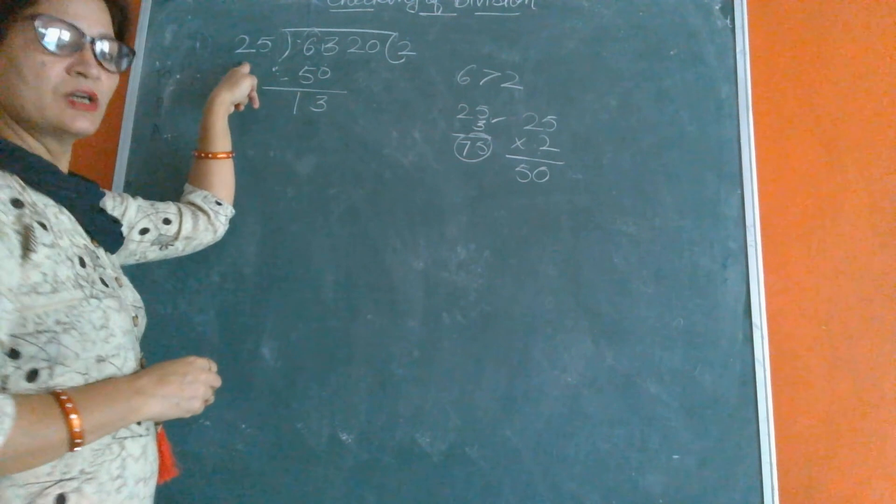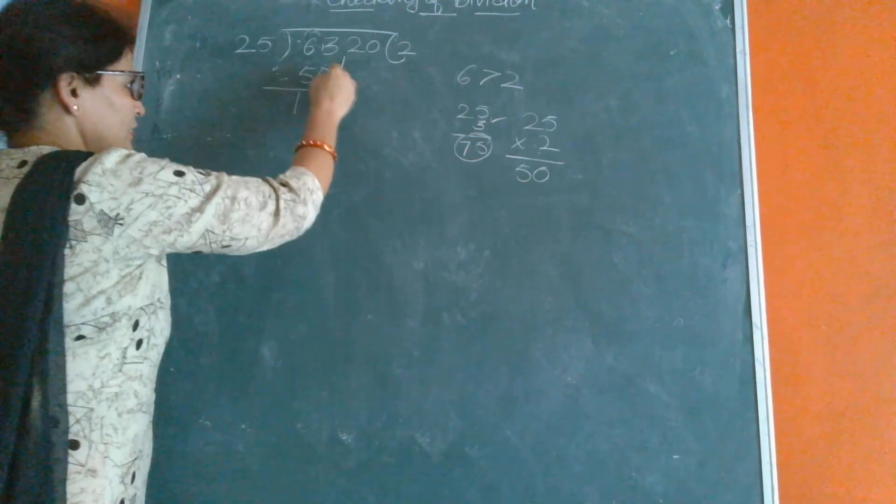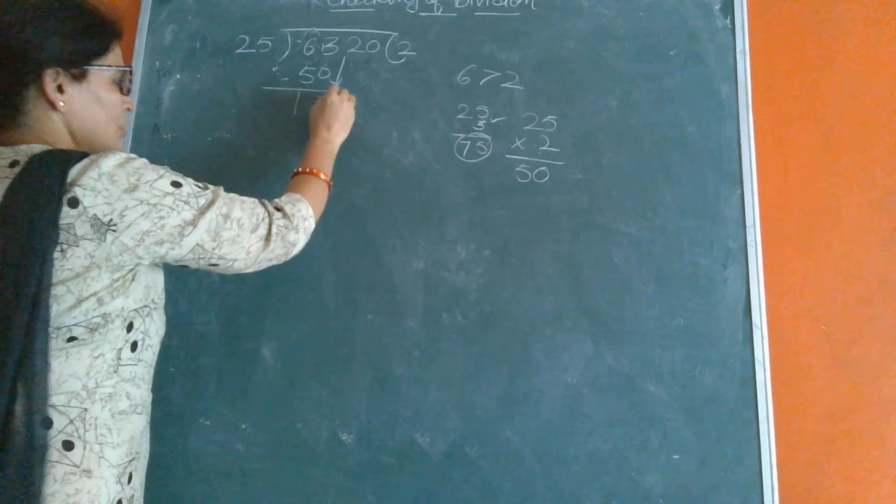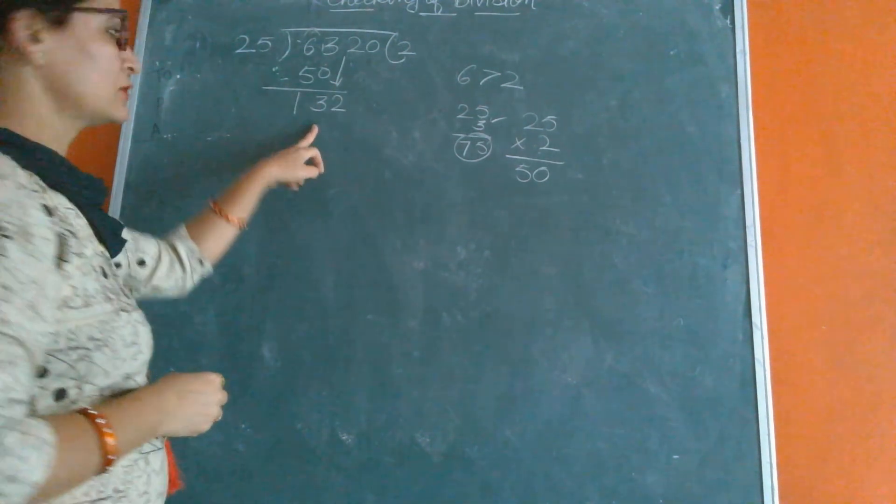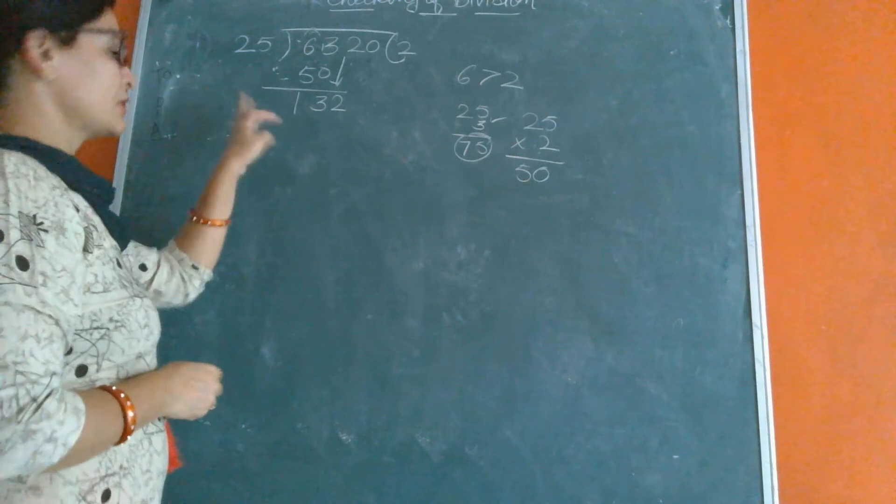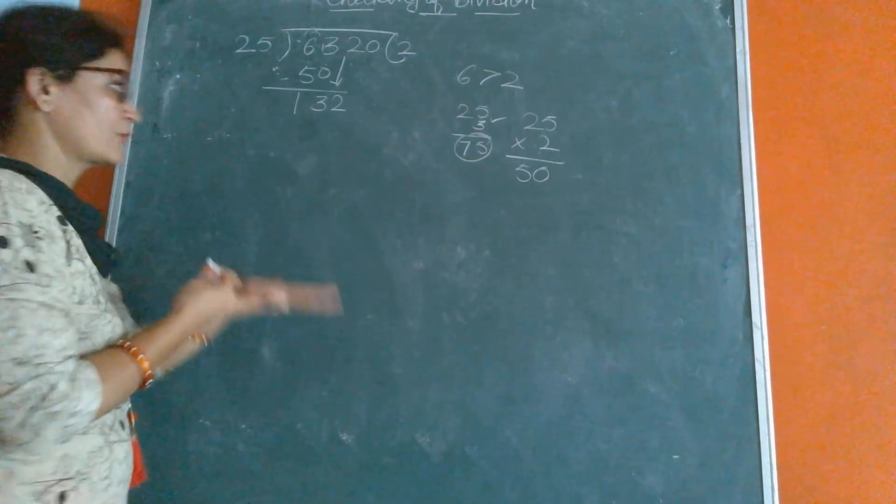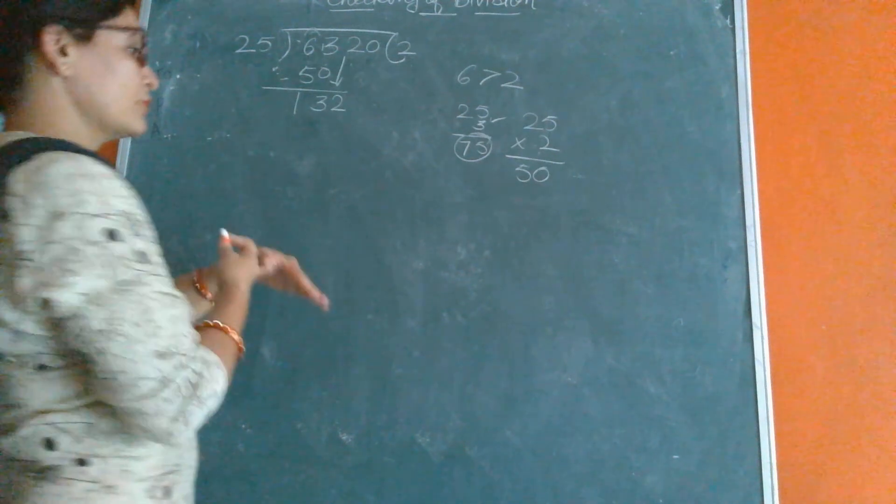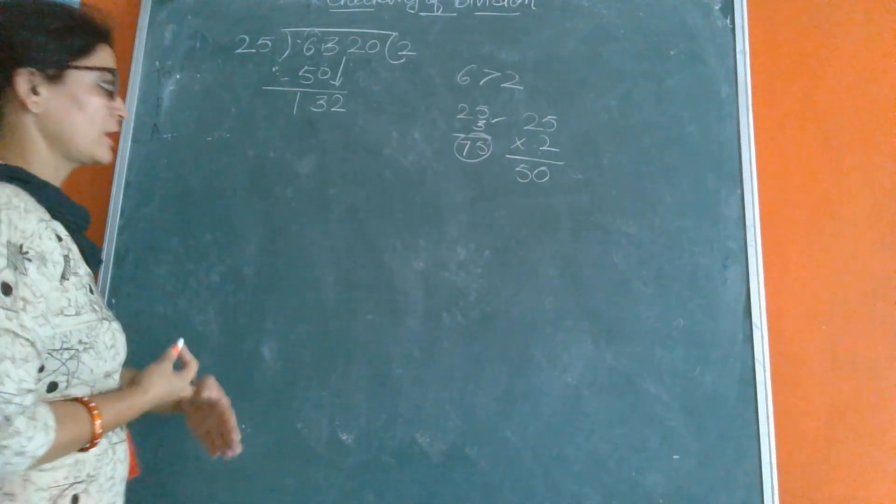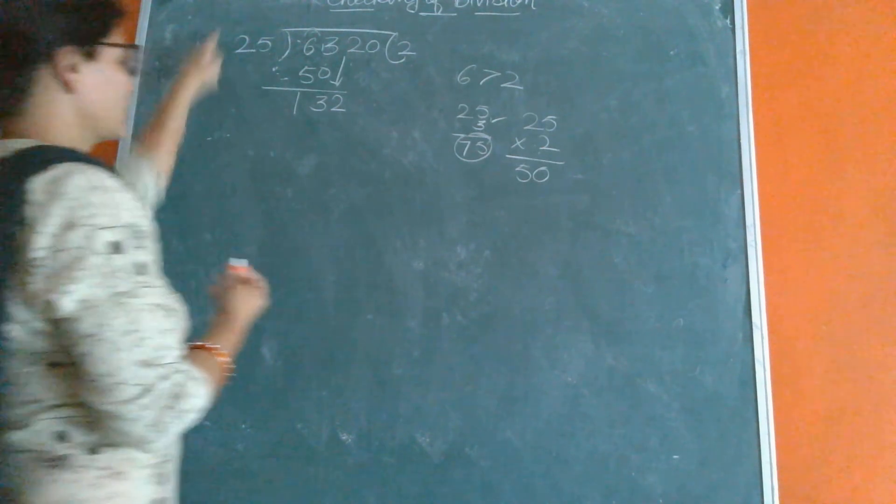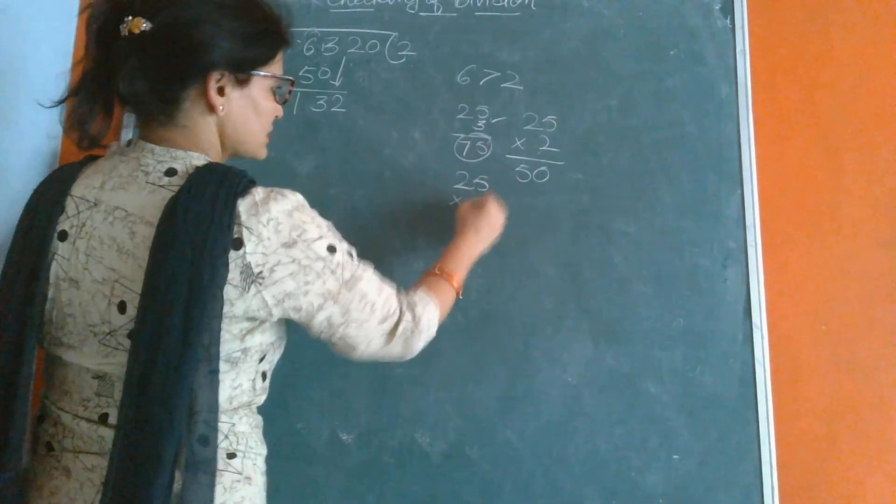13 is smaller than 25, so we will bring down from the dividend the next number, which is 2. Now we have 132. Count the table of 2. If 13 comes in the table of 2, it does not come in the table of 2. So we will take the less number of 13, which is 2 times 6 is 12. So now we will multiply the whole number 25 by 6.